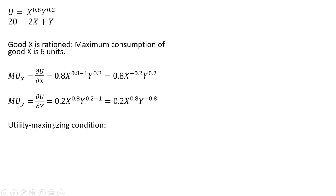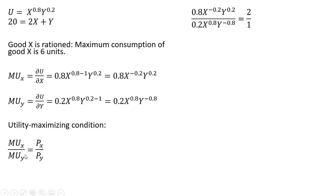We set up our utility maximizing condition, where the marginal utility of Good X divided by the marginal utility of Good Y equals the price of Good X divided by the price of Good Y. This is the same as saying the marginal rate of substitution equals the ratio of the prices. Making our substitutions for MUx and MUy and plugging in the respective prices — $2 for Good X and $1 for Good Y.